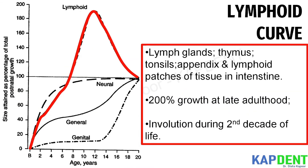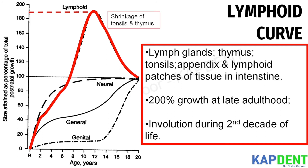The first is the lymphoid curve. This describes the growth of lymph glands, thymus, tonsils, appendix, and lymphoid patches of tissues in the intestine. Since this tissue is involved with the child's developing immunological capacities including their resistance to infection, it reaches its maximum of about 200% of adult size at late childhood, and then declines in the second decade of life, which is related to the involution or shrinkage of the thymus and tonsils.